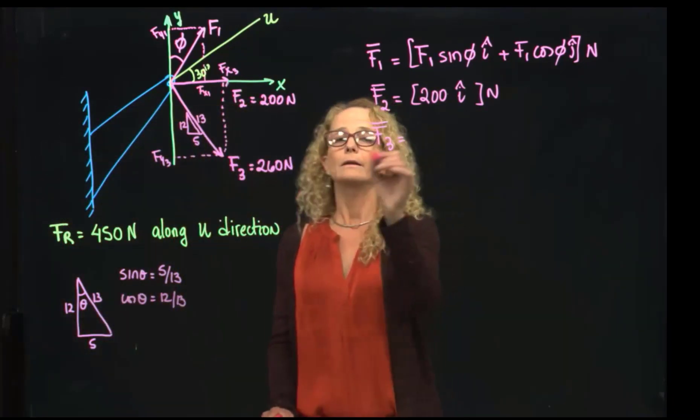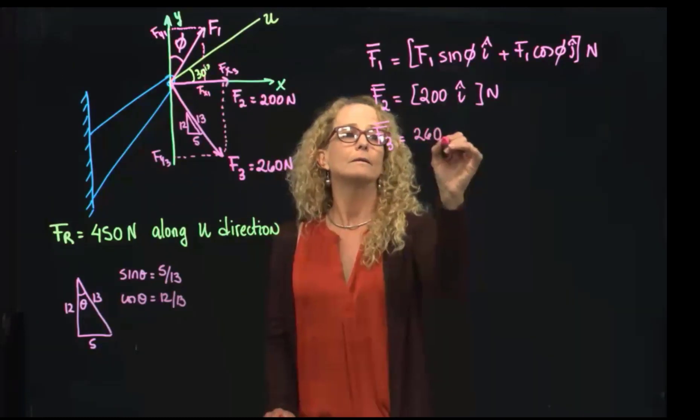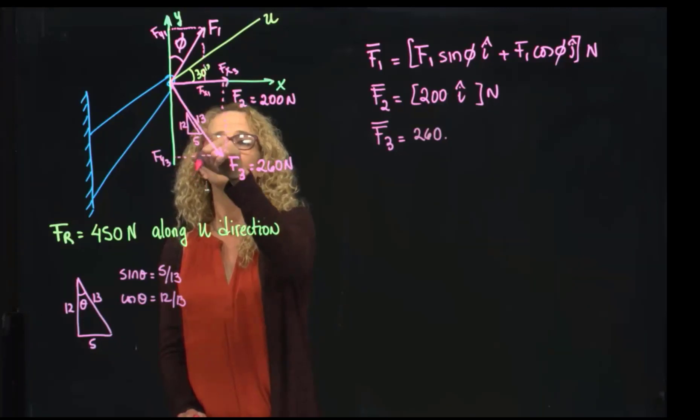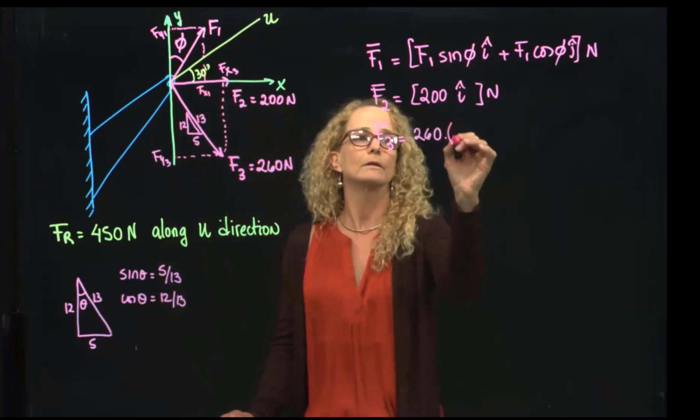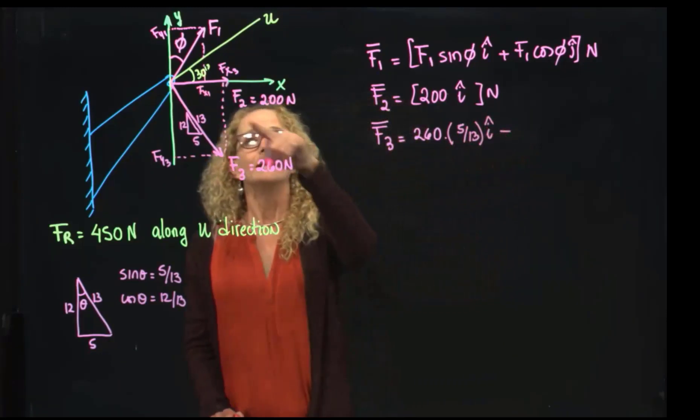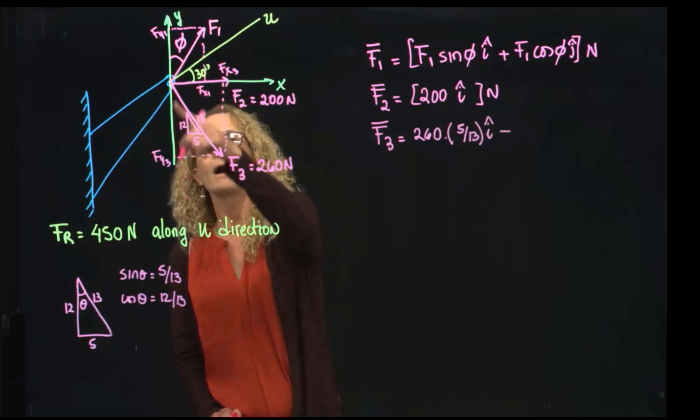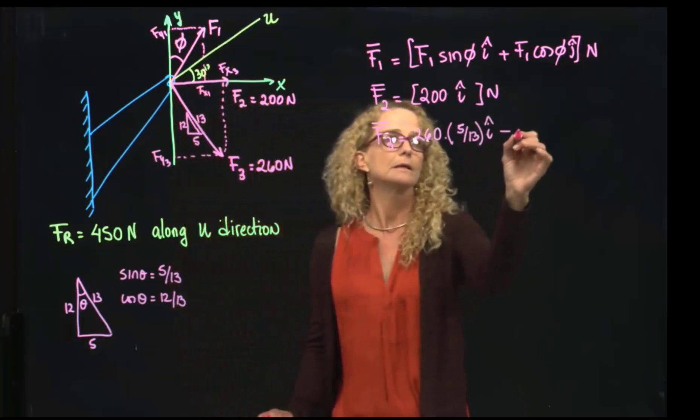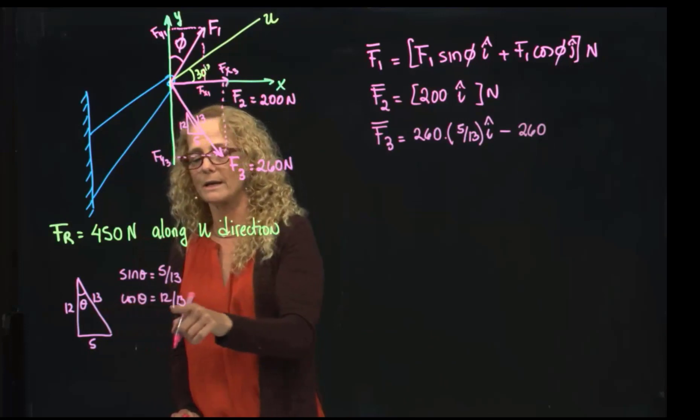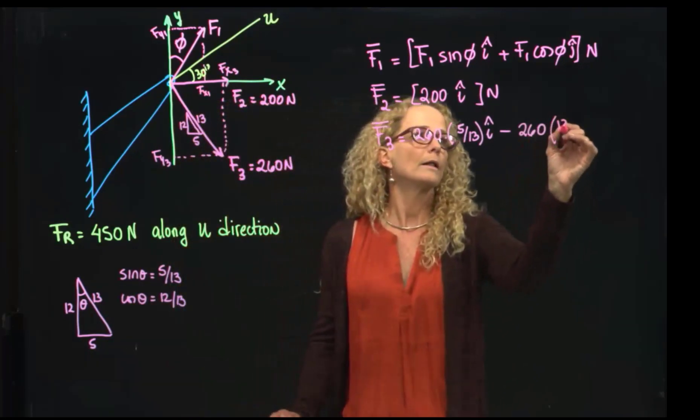So we can say that this is 260 times. When we want to find the x-component, it will be the opposite divided by the hypotenuse, so I say 5 over 13 in the I-direction, and it's positive. And the y is negative, so it is 260 cosine, which is 12 over 13 in J-direction.